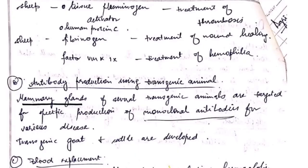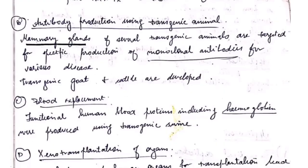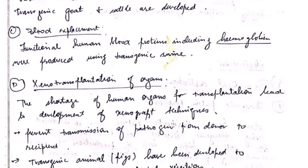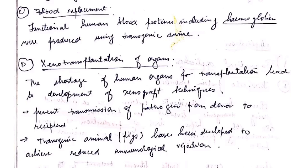Examples include sheep producing CFTR — cystic fibrosis transmembrane conductance regulator — which helps in the treatment of cystic fibrosis. Others help in treatment of wound healing or hemophilia. Another application is antibody production using transgenic animals, in which specific monoclonal antibodies are produced. There is also blood replacement, where functional human blood proteins including hemoglobin were produced using transgenic swine.